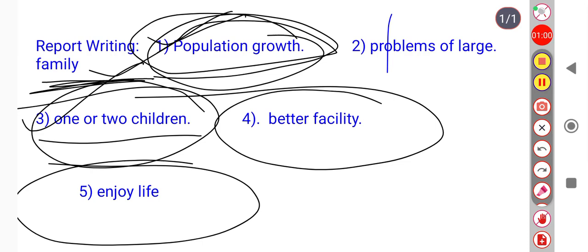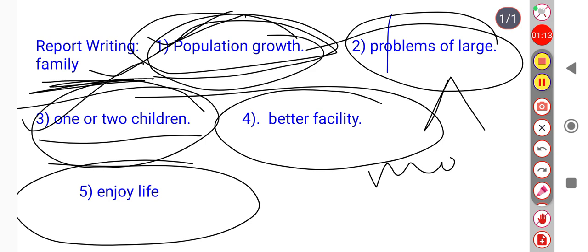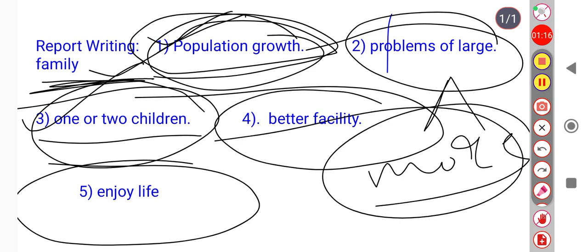You have to mention that if in the family there are more than four or five children, parents cannot afford them. Large family means more than four. That's why parents cannot afford them. It's a bigger problem - they cannot give them proper education, clothes, and food.